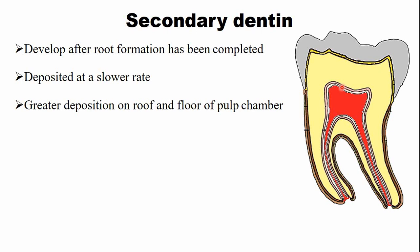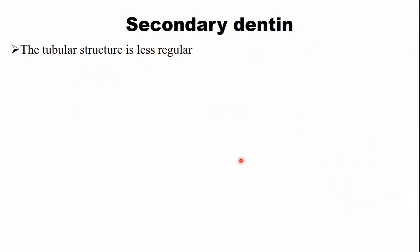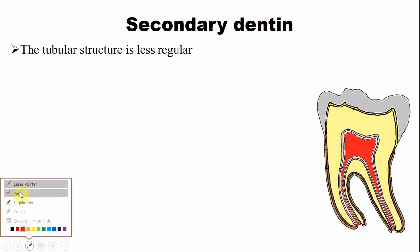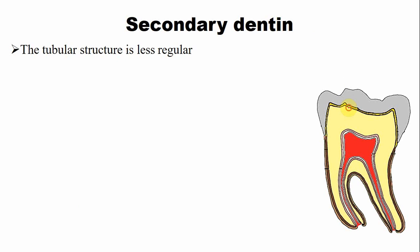This dentine deposition results in a reduction in size and change in shape of the pulp chamber. In secondary dentine, the tubular structure is less regular. Normally dentine contains tubules, but in secondary dentine the tubules are less regular due to crowding of the odontoblasts as they travel from a greater surface area to a lesser surface area.